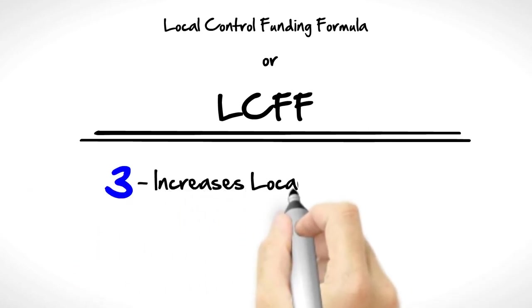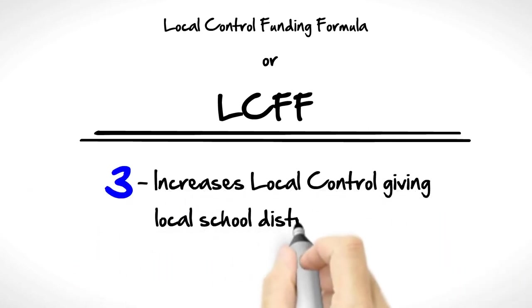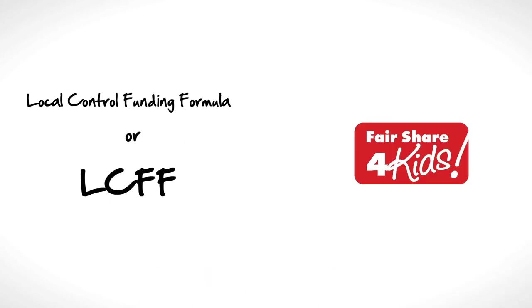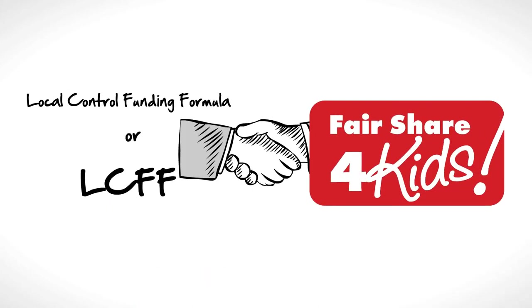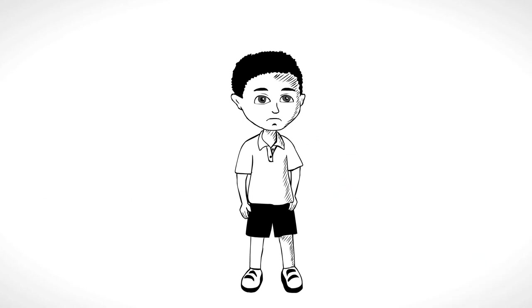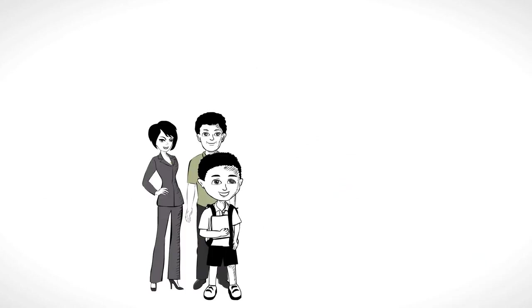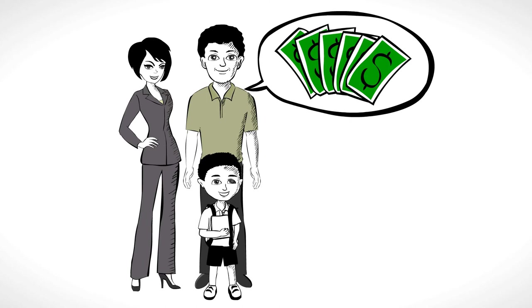Number three: Increases local control, giving local school districts more options on how to best use funds. Fair Share for Kids supports this plan so long as low-income students receive the support they need and parents have a voice on how monies are spent.